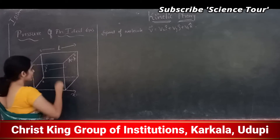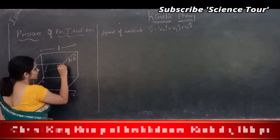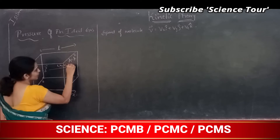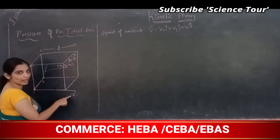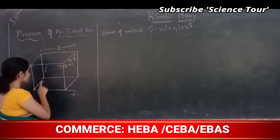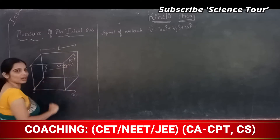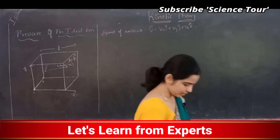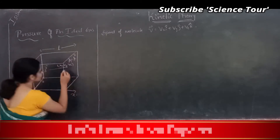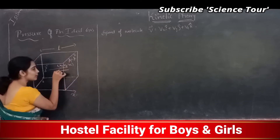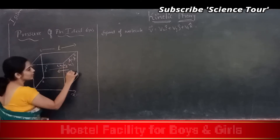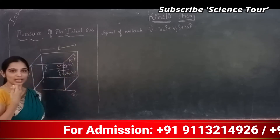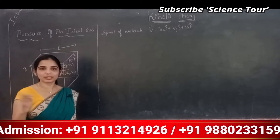While hitting, the velocity of the molecule is Vx, Vy, and Vz — Vx is its velocity along the x-axis, Vy along y-axis, and Vz along z-axis. After hitting it will rebound back with velocity Vy, Vz, and minus Vx.